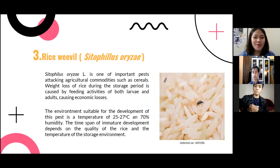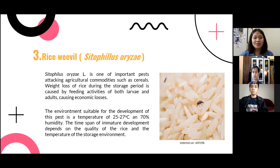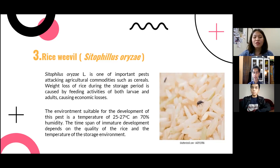Rice weevil, Sitophilus oryzae, is one of the important pests attacking agricultural commodities such as cereals. Bran loss of rice during the storage period is caused by the feeding activities of both larvae and adults, causing economic losses. The environment suitable for the development of this pest is a temperature of 25 to 27 degrees Celsius and 70% humidity. The time span of immature development depends on the quality of the rice and the temperature of the storage environment.